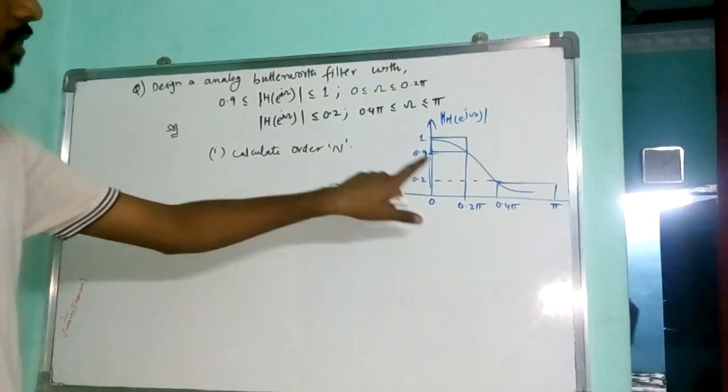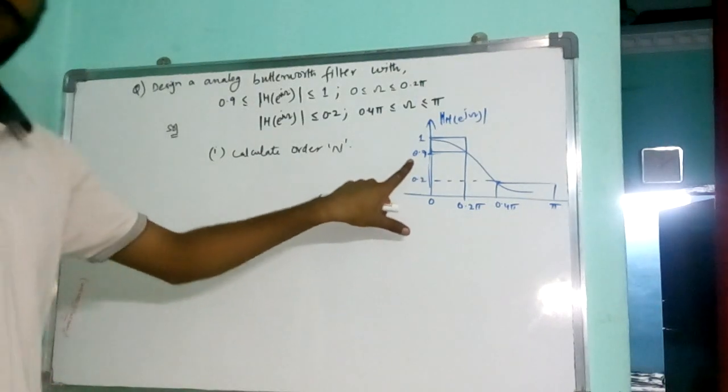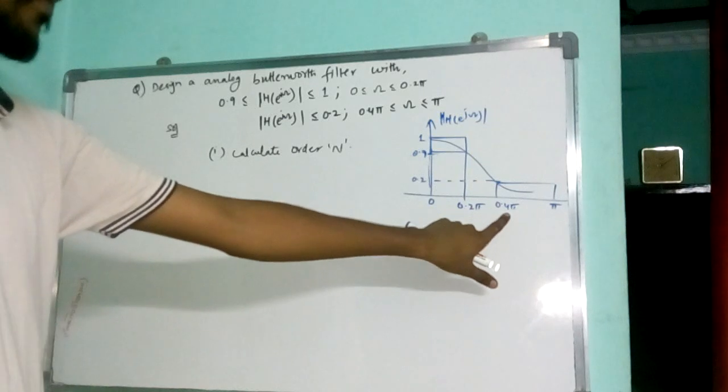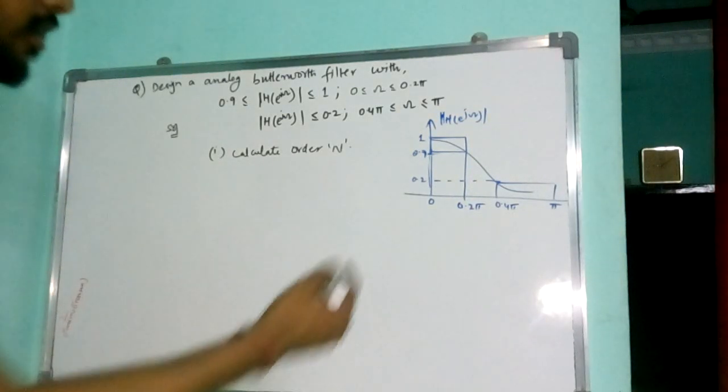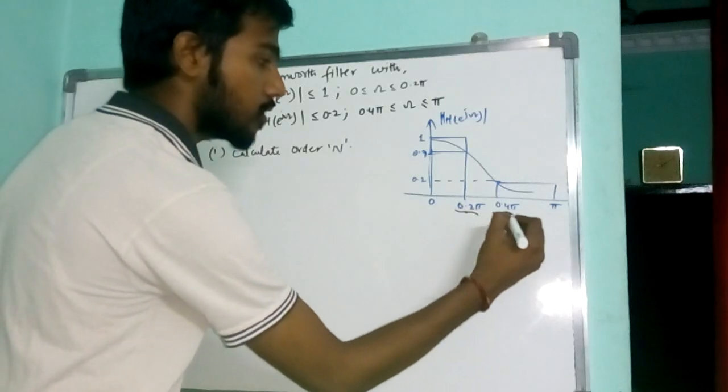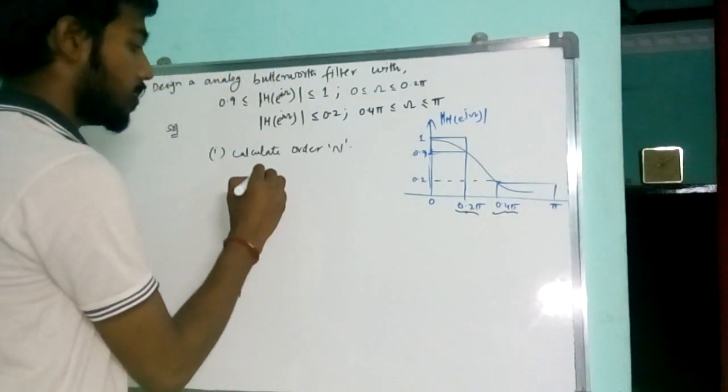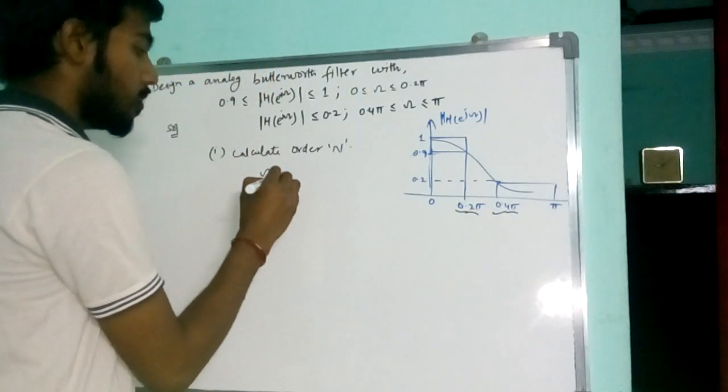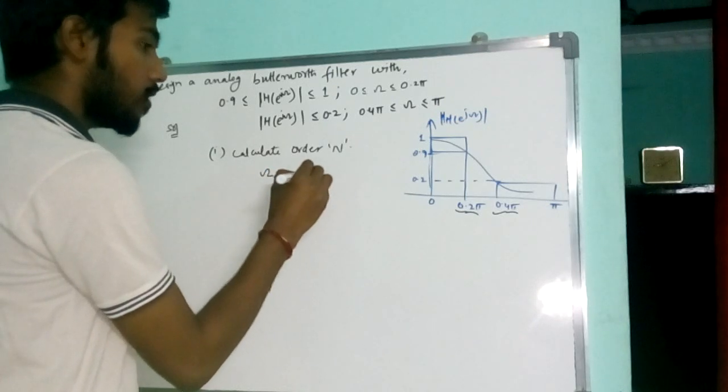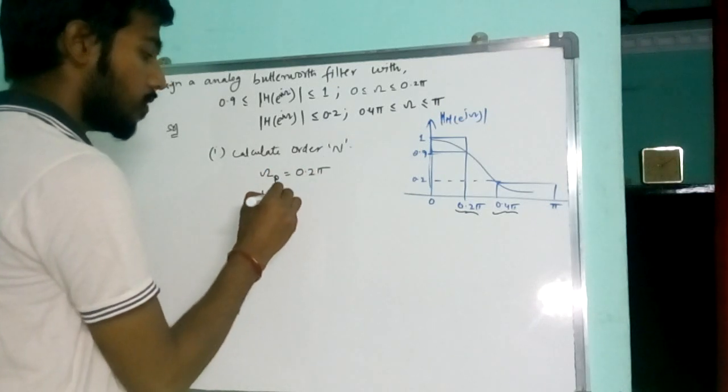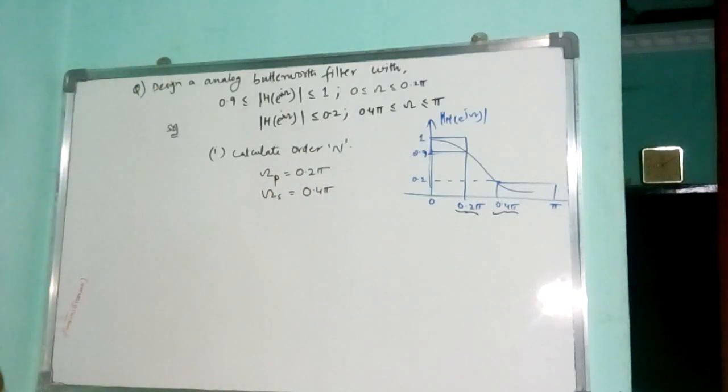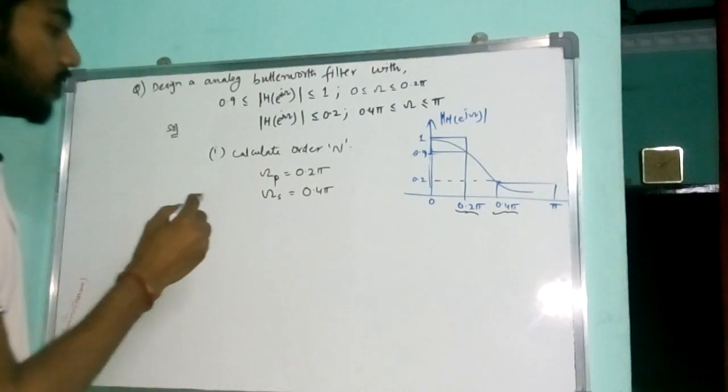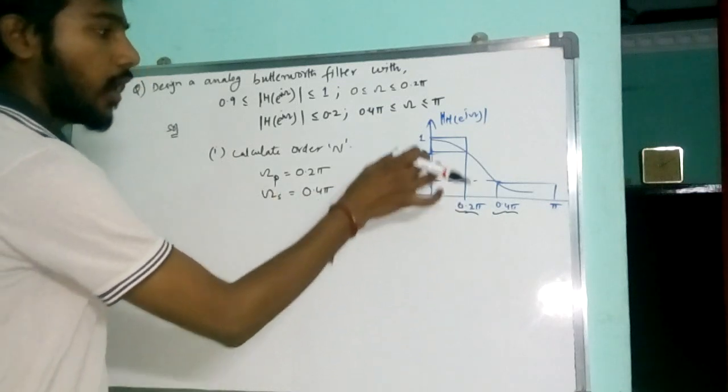We know that at passband frequency, whatever detonation we have is a passband detonation. And at stopband frequency, whatever detonation we have is a stopband detonation. So from these values in this figure we can say that my omega p will be 0.25, omega s will be 0.45. Now, after this, attenuations are.